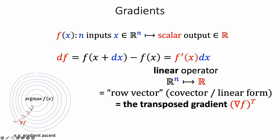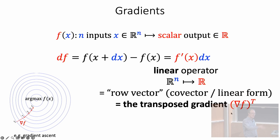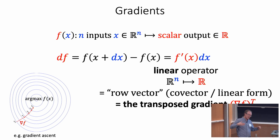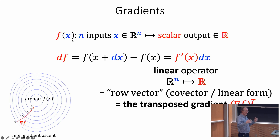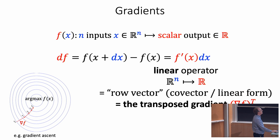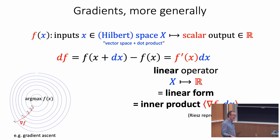Gradients are another great example. With n inputs in Rⁿ and a scalar output, the change in the scalar for a small change in the input must be a linear operator that takes a vector and gives a scalar — we may call it a row vector, a linear form, or a covector. We want the gradient to be a column vector of the same shape as x so it points in the uphill direction and you can do gradient ascent. So the derivative is a row vector; the gradient is a column vector — its transpose.